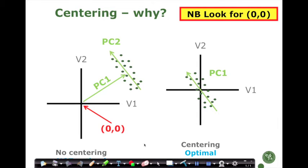So why do we need to center? PCA looks for 0,0, and if we have a swarm of data that is not centered, we will get an estimate of the first component pointing toward that swarm — which might suggest that variables are correlated when they actually are not. When we do the centering and scaling, principle component 1 will most definitely describe the axis of variation in the data, not just the direction toward 0,0.